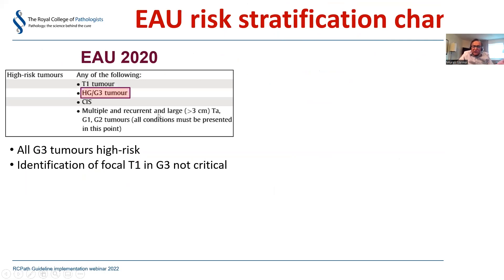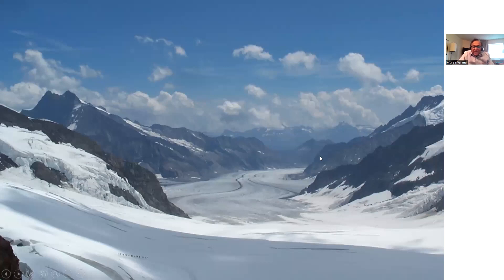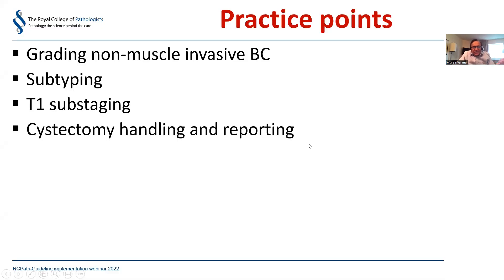Risk stratification has changed. In 2020 all G3 tumors were high risk, so identification of focal T1 was not critical - G3 Ta or G3 T1 received identical treatment. But today, under the latest guidelines, G3 Ta with only one risk factor is intermediate risk, so identification of focal T1 in G3 can be critical. It's a moving target.